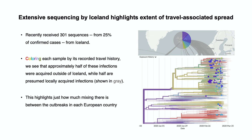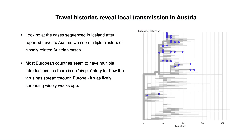For any given sample, we can draw inferences about where its predecessors must have been, but we can't rule out the possibility of indirect transmission by way of an unsampled location. This is a powerful example of how comprehensive sequencing efforts and travel logging by one country can help us understand the local situation elsewhere, even for places that aren't yet generating sequencing data.